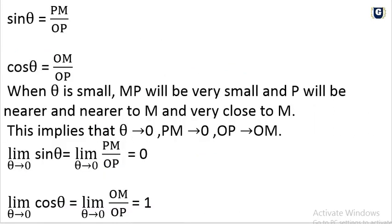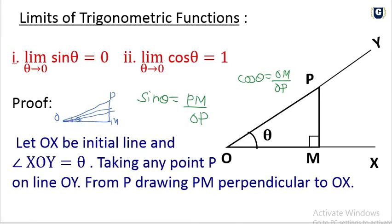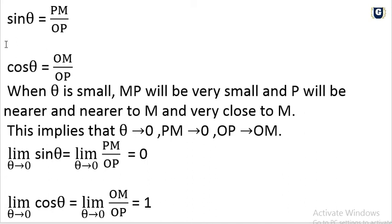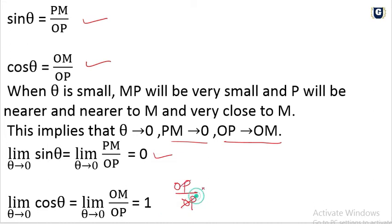So when theta equals 0, PM will be 0 and OP will equal OM. Sin theta equals PM by OP. Limit as theta tends to 0 of sin theta equals limit of PM by OP. Since PM equals 0, zero divided by any number equals 0. For cos: limit as theta tends to 0 of cos theta equals OM by OP, and OP equals OM, so the limit equals 1.